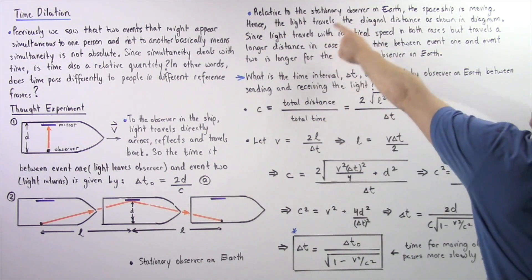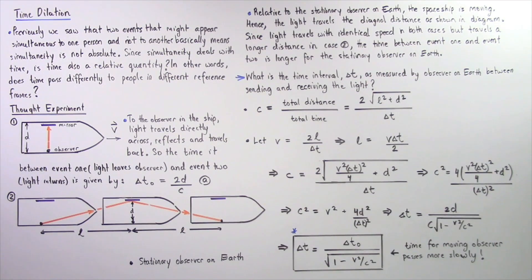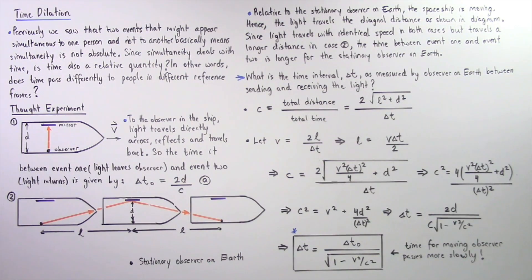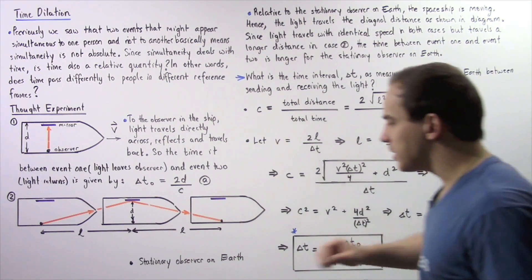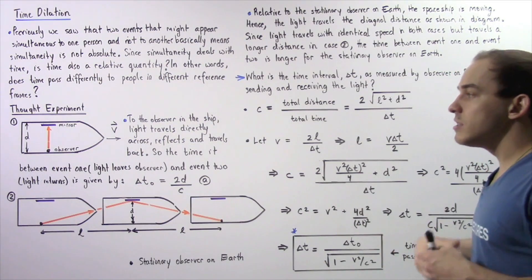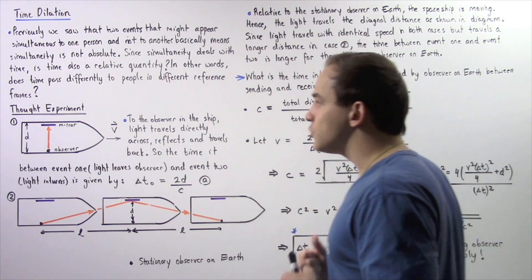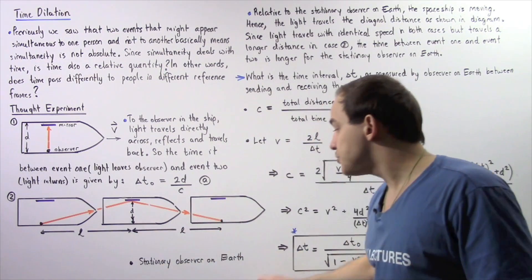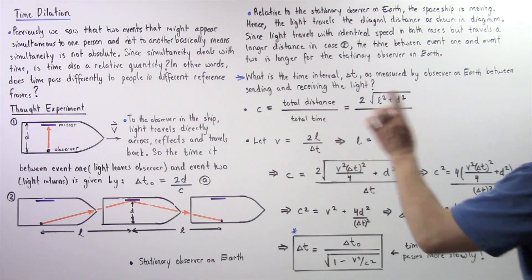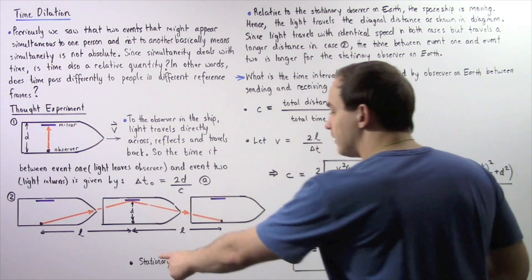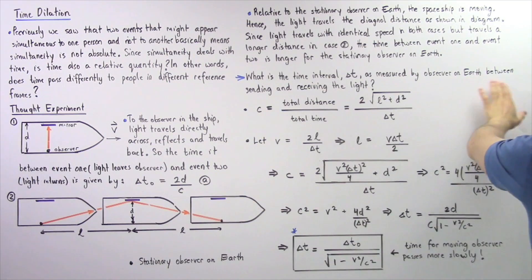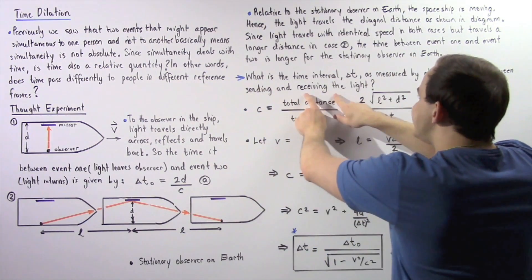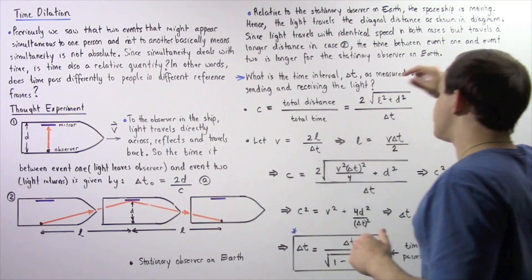Since the light travels with identical speed in both cases but travels a longer distance in case number two, the time between event one and event two is longer for the stationary observer on Earth. The quantity of time it takes for the observer inside the spaceship is less than the time for the stationary observer on Earth. So what exactly is the time interval delta T as measured by the observer on Earth between event one and event two?